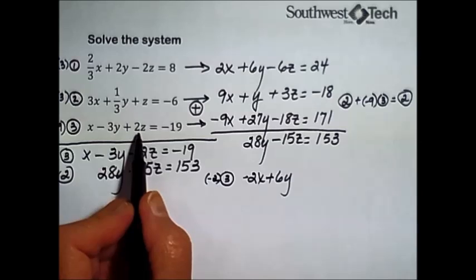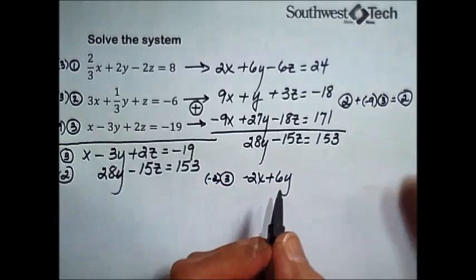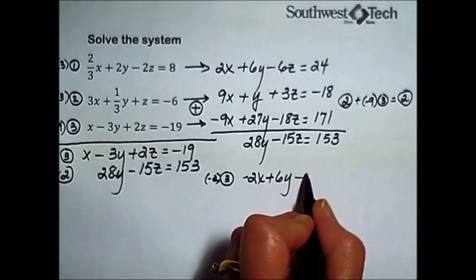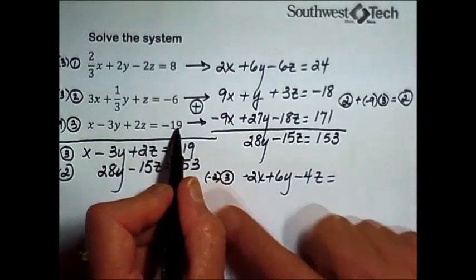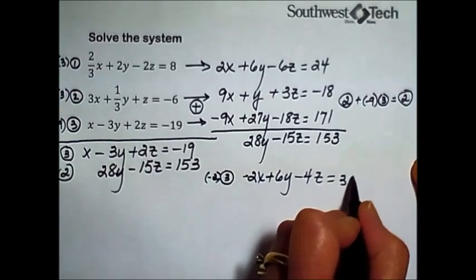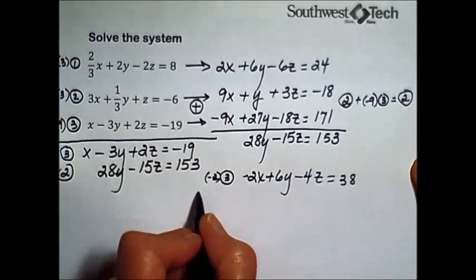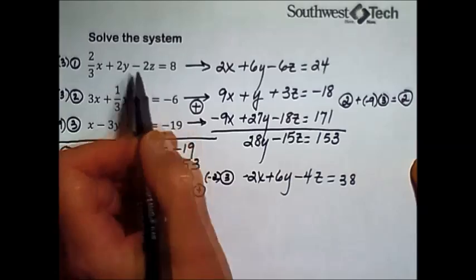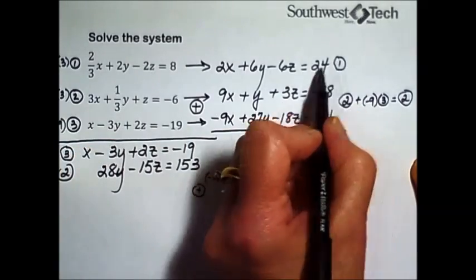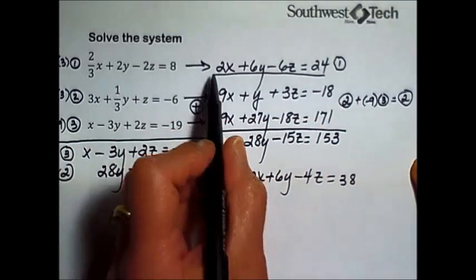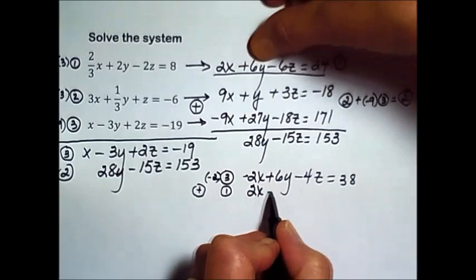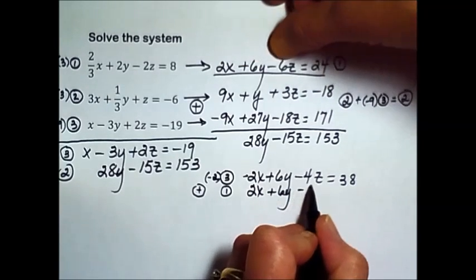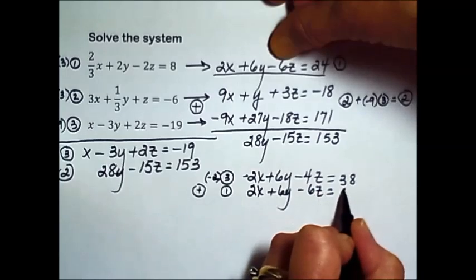Negative 2 times 2 is negative 4z. And negative 2 times our negative 19 is a positive 38. I'm going to add it to our equation number one that was altered getting rid of the fraction. So I'll write that here so we can keep track of it: 2x, 6y minus 6z equals 24.